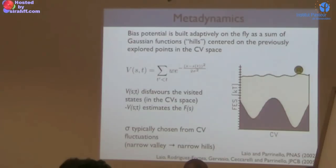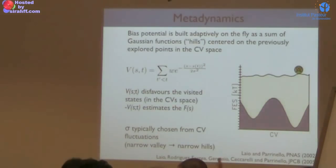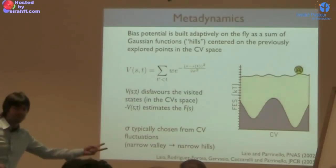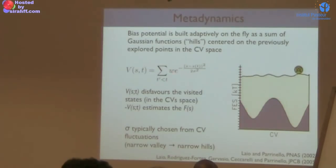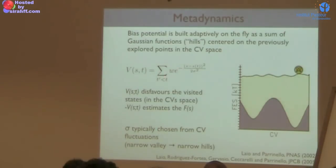As a generalization, the collective variable doesn't have to be one-dimensional. We will see examples of two-dimensional collective variables — two collective variables at the same time — and then you add a multi-dimensional Gaussian. You have parameters: how quickly you add sand to your simulation. We will discuss in detail the effect of this deposition rate parameter in the next few slides. There is also the sigma parameter, which is the width of your hills.